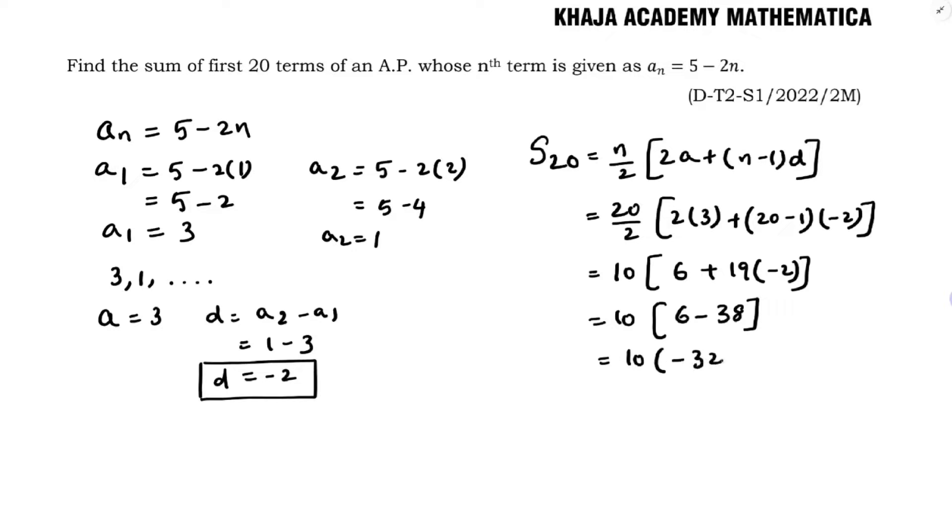10 into minus 32 which is minus 320. Sum of 20 terms is minus 320.